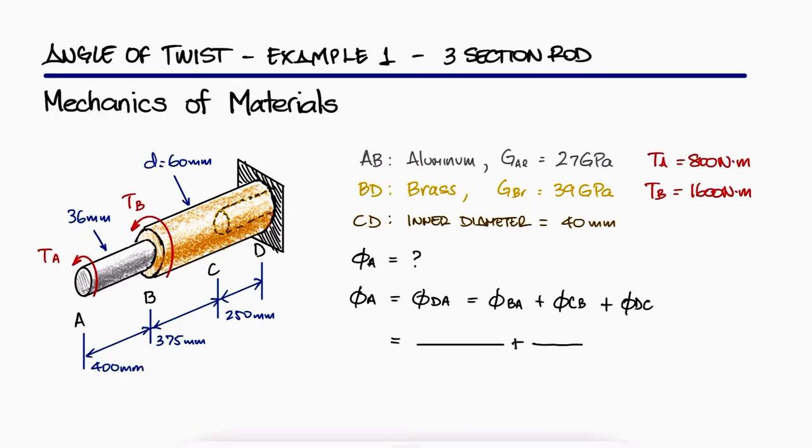For each section of the rod, we need to find the torque, the length, the polar second moment of area, and use the shear modulus information.